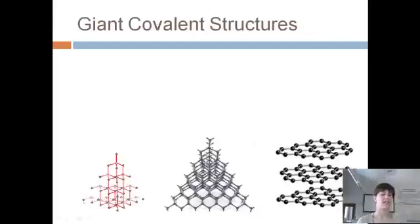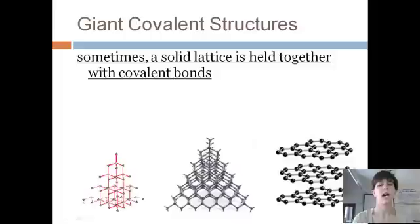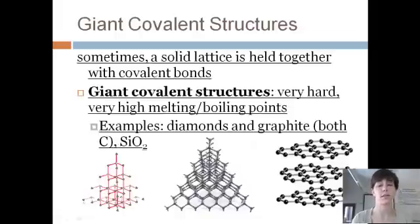There is one exception to this, and this is the last thing we'll talk about, is there are a special type of covalent compounds called giant covalent structures. And you're pretty familiar with these already. A giant lattice, sort of like an ionic array, will be held together with covalent bonds. But because they're covalent bonds, they're much, much stronger than ionic bonds. They have very high melting and boiling points. They're extremely hard.